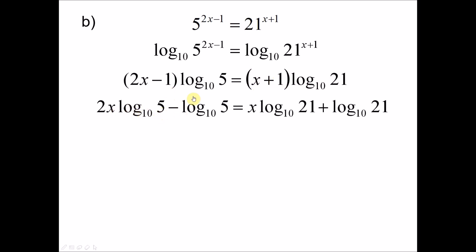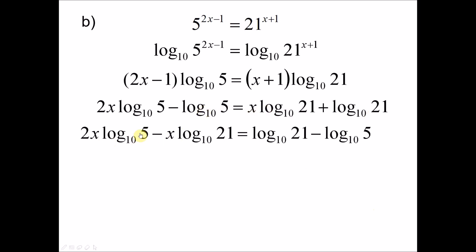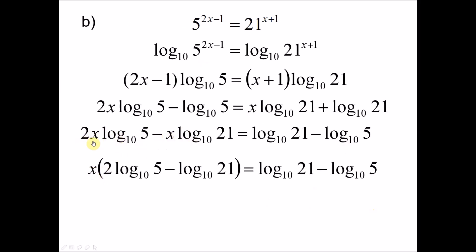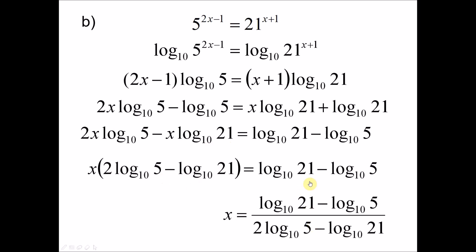So we have 2x log base 10 of 5 minus log base 10 of 5, equals x log base 10 of 21 plus log base 10 of 21. Now when you have an unknown x, we always try to group the terms with x together. We move the x terms to the left hand side and the terms without x to the right hand side. We factorize x — so we have x times (2 log base 10 of 5 minus log base 10 of 21), then move the bracket to the right hand side to get x.